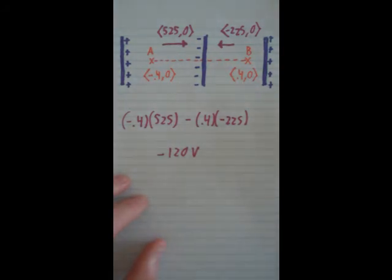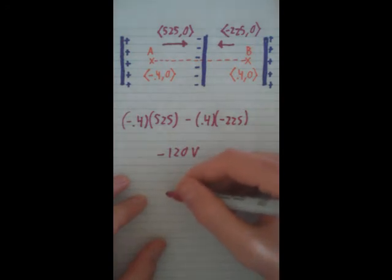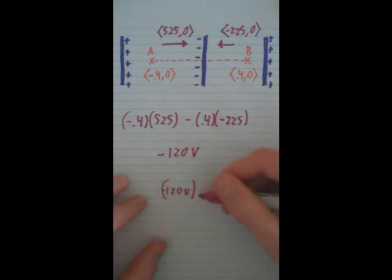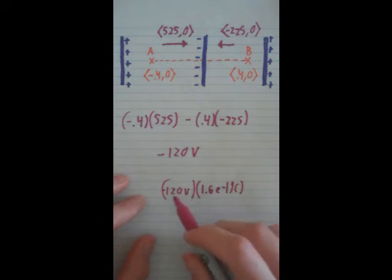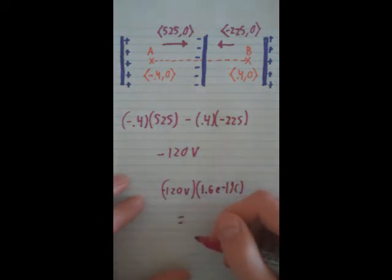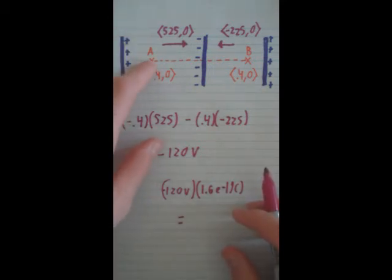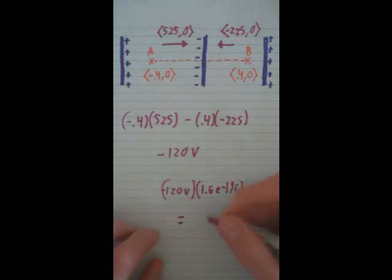And the way we do that is we multiply our negative 120 volts times the charge of a proton, which is 1.6 e to the negative 19th coulombs. And when we multiply volts and coulombs, we get energy. So, we know if we take a proton from A to B, there's going to be a potential of negative 1.92 e to the negative 17th joules.